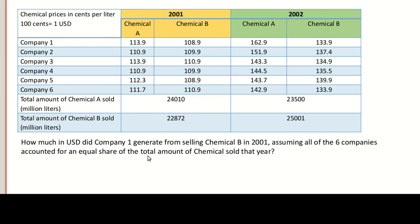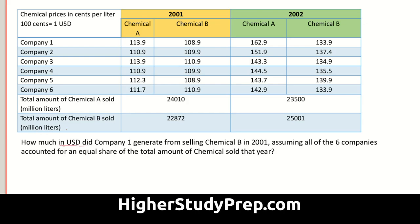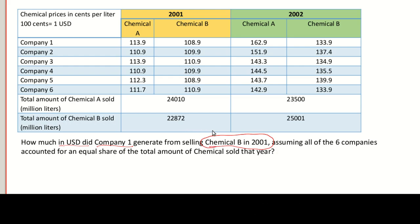At first glance you can see it's a table format with a lot of data, but as I said, don't get overwhelmed. I'll quickly glance at the question first to see what information is relevant. It says: how much in USD did company one generate from selling chemical B in 2001? So the first pointer is they're only focusing on chemical B and 2001. There are two sections of the table — year 2001 and 2002 — so we'll focus only on 2001.